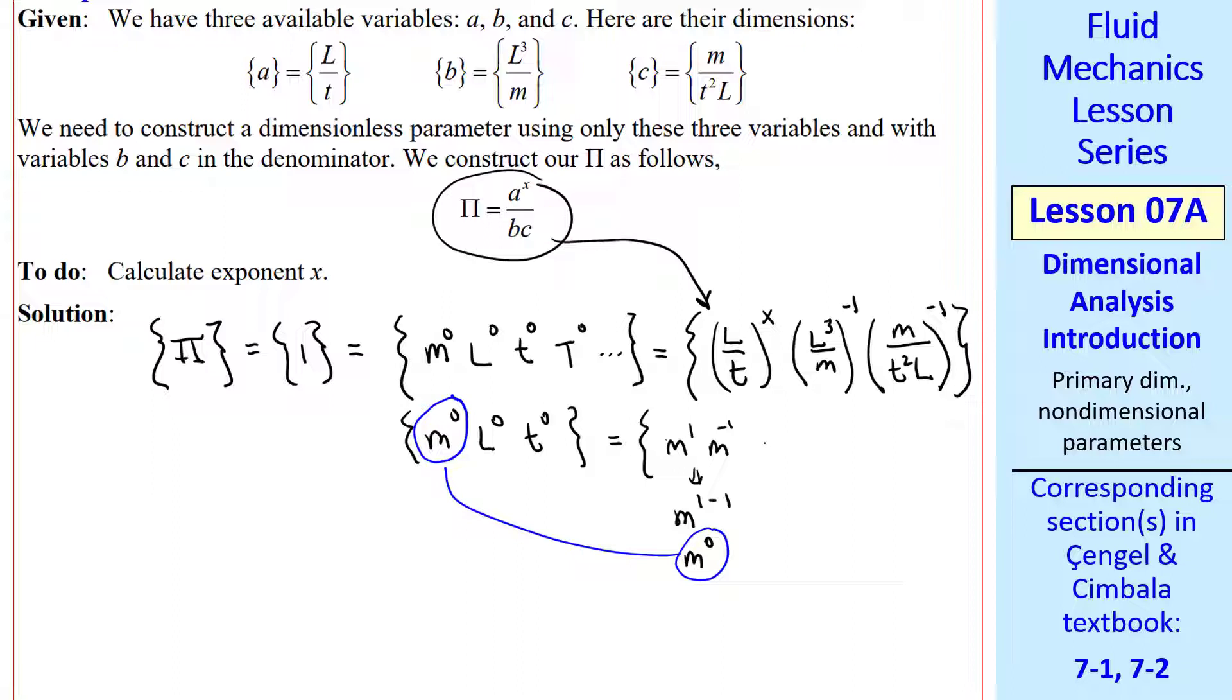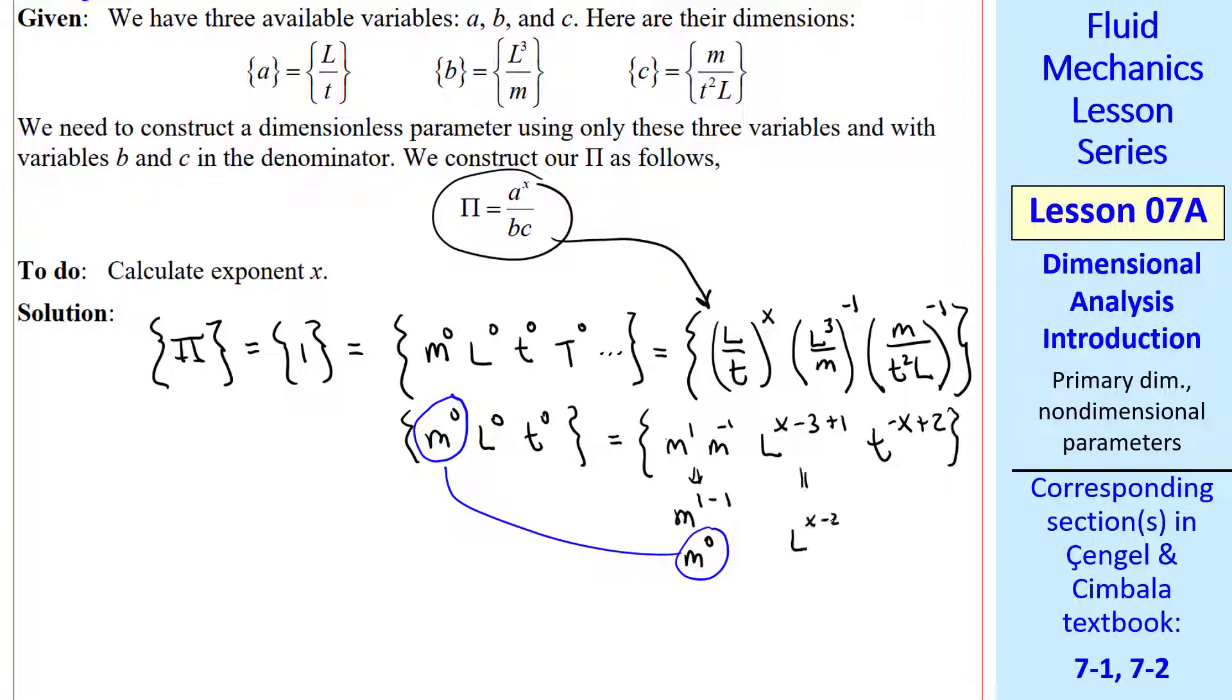Now let's consider the lengths. I'm not going to write it out like this, but just do the addition of exponents in our head. We have L to the X from this term, L to the minus 3, and L to the minus 1 raised to another minus 1, which gives us a plus 1. And for T, we have a negative X from this term, and a negative 2 raised to the negative 1, which is a plus 2. We simplify this to L to the X minus 2, and T to the 2 minus X.